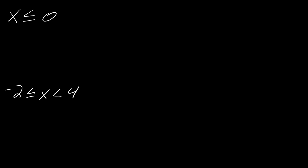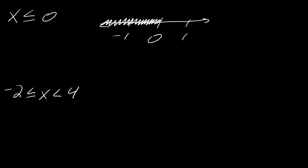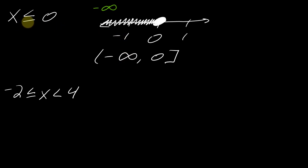Try this on your own: x is less than or equal to 0 — set up the number line and interval notation, then hit play when ready. Here's the solution: center on 0, with -1 and 1 on either side. Since it's less than or equal to, we go left and 0 is included, so put a closed dot. The interval notation is (-∞, 0].